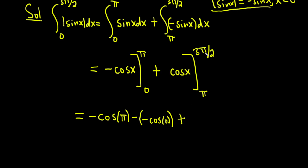Plus, plug in the top number so you'll get cosine of 3 pi over 2. And then minus, plug in the bottom number so you get cosine of pi.